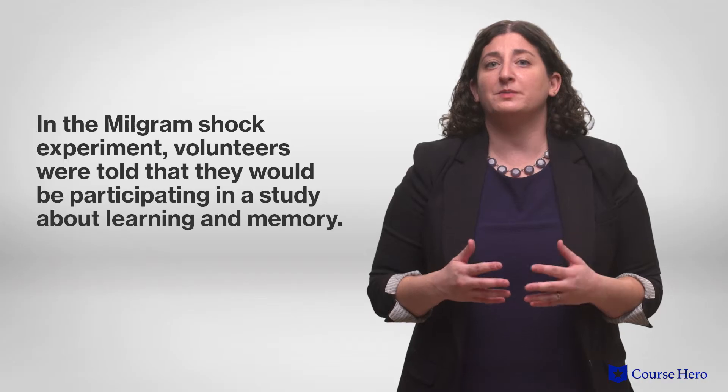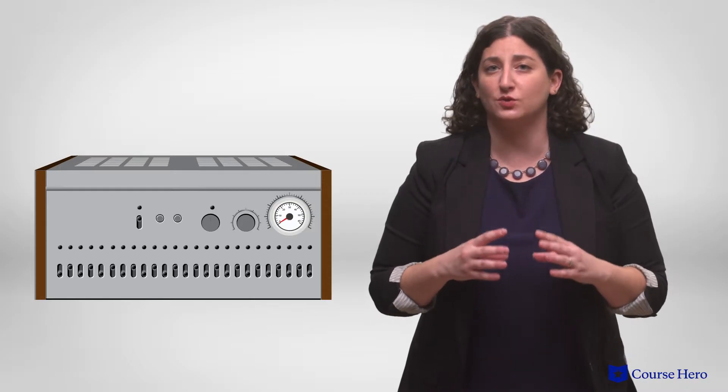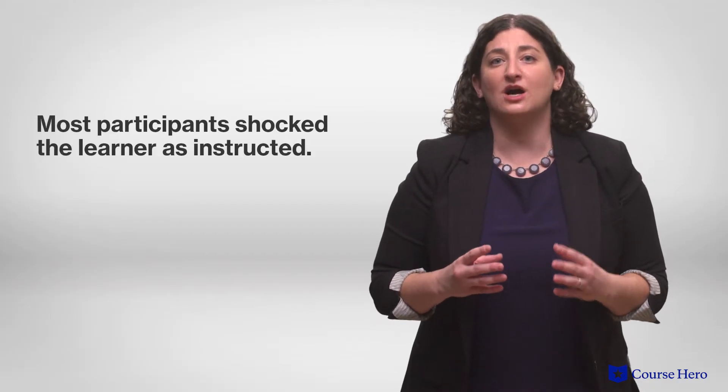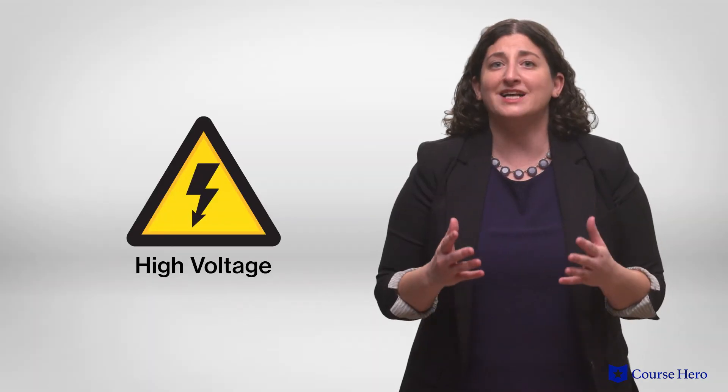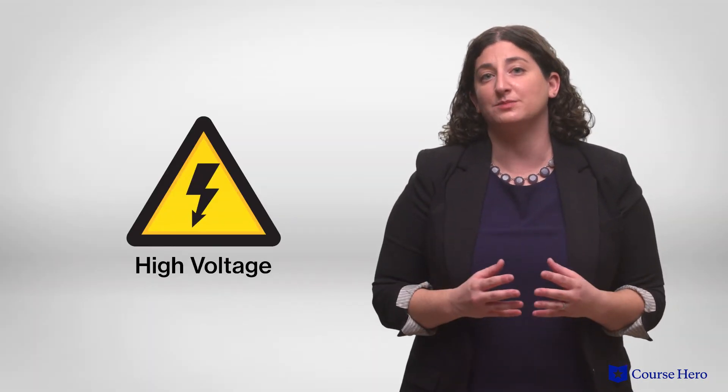A particularly disturbing aspect of this research, though, is that many people will follow orders given by an authority figure even if it involves knowingly causing harm to others. In the Milgram Shock experiment, volunteers were told that they would be participating in a study about learning and memory. A researcher instructed them to use a device to deliver increasingly stronger shocks to a learner — actually a confederate only pretending to be shocked — when they made a mistake on the task. Even though they thought that they were causing deliberate harm to another person, most participants shocked the learner as instructed, some even administering a level of shock that they knew could be deadly. And they continued to do so, even as the learner cried for help, complained of heart trouble, and begged the participant to stop — even continuing with maximum voltage shocks to the point that the learner pretended to be unresponsive. It truly gives us a better understanding of the phrase 'just following orders.'